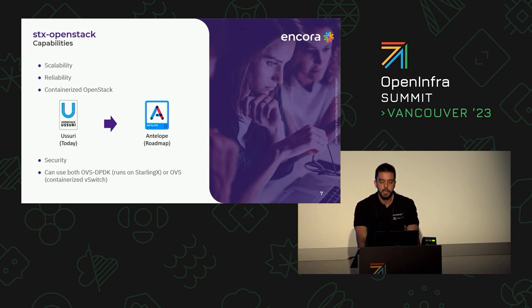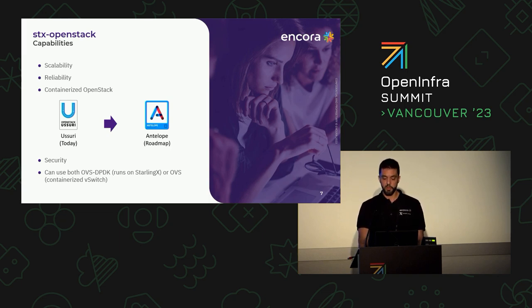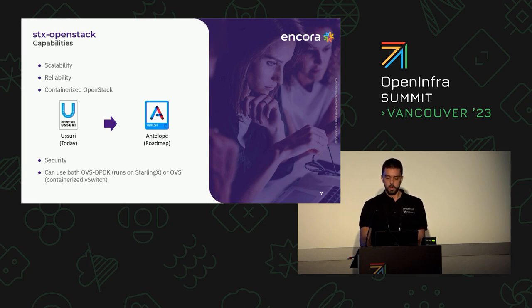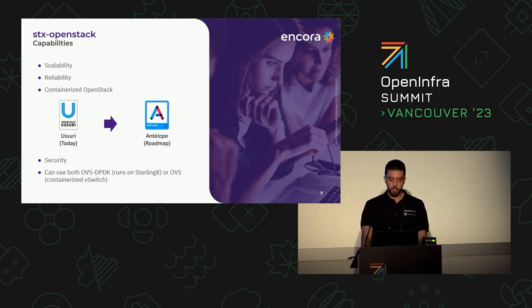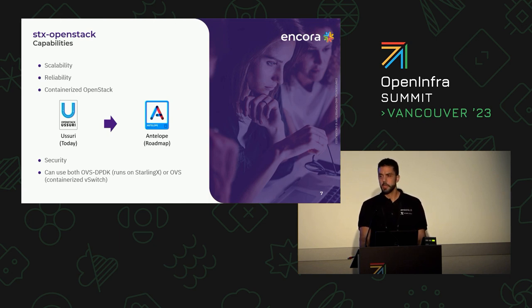STX OpenStack is also designed with security in mind. It offers features like RBAC (role-based access control), encryption, and network isolation, considering it runs on top of StarlingX. Key features include support for both virtual machines and containers, allowing easy migration between the two, as well as high availability and fault tolerance, ensuring applications are always up and running.